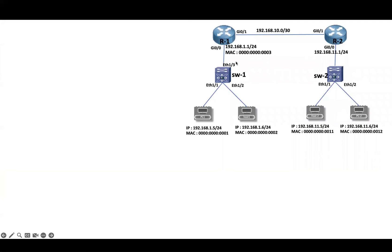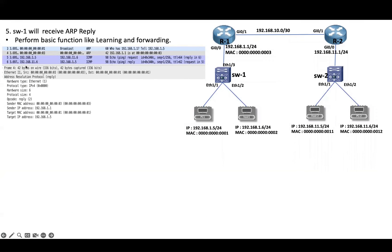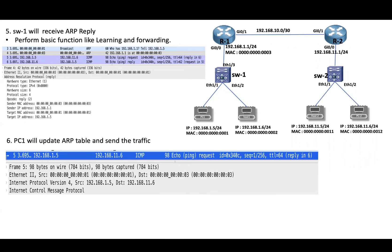Switch1 will receive the ARP reply on Ethernet 1/3 and will learn the MAC address based on the source MAC of the received frame and update the MAC address table. If the MAC address is already known, Switch1 will update the existing entry and forward the frame based on the destination MAC address. Since the destination MAC is unicast and known, Switch1 forwards the frame out of Ethernet 1/1. PC1 will receive the ARP reply from R1, update its ARP table, and send ICMP traffic.